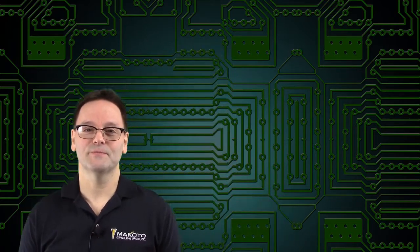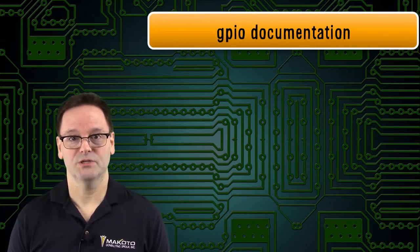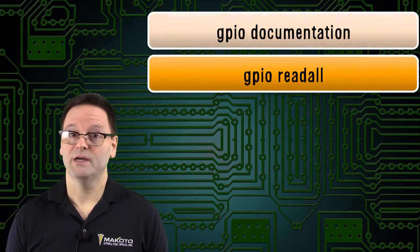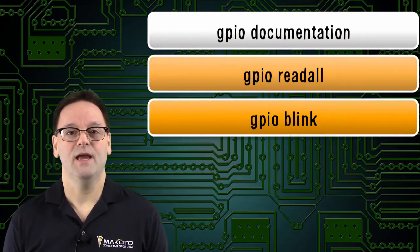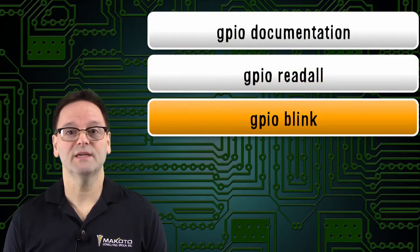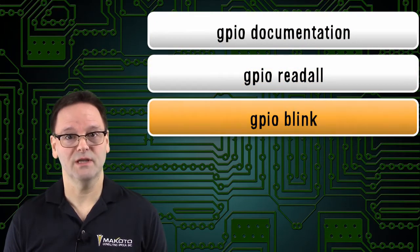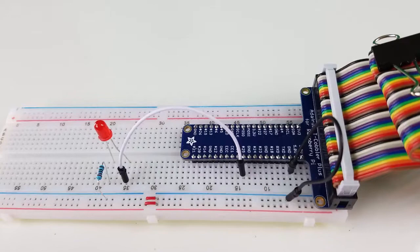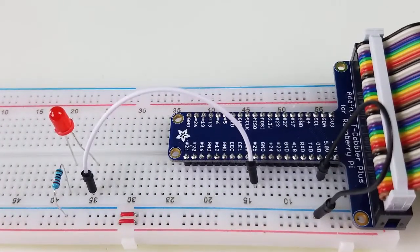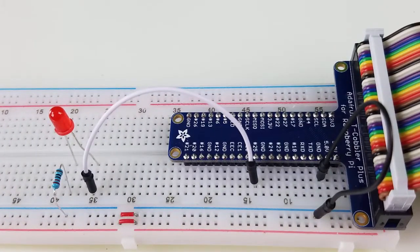Here's what you'll see in the video: the GPIO documentation, the GPIO read-all command and its output, and GPIO blink to blink a simple LED circuit. To demonstrate GPIO blink, I'll reuse the LED circuit from part one.